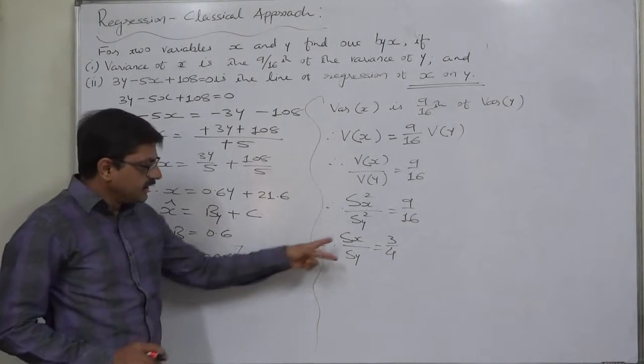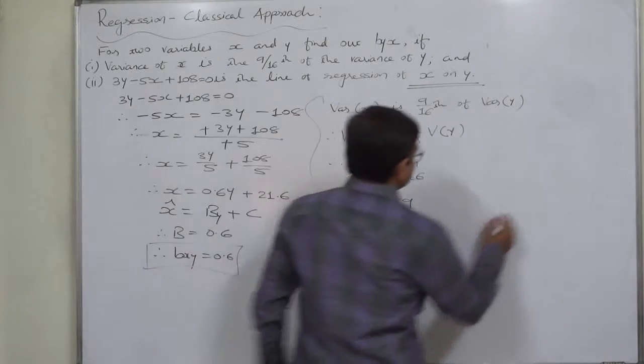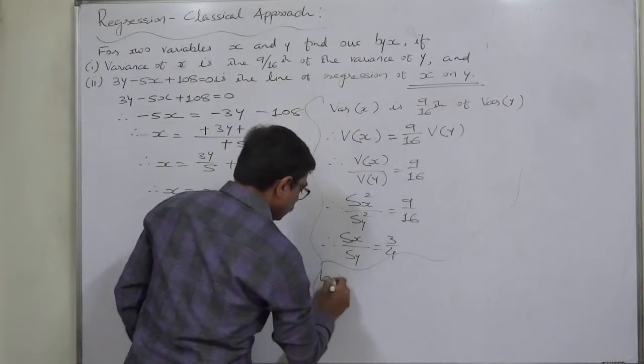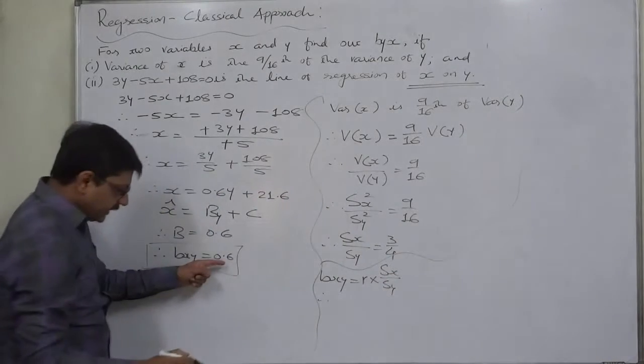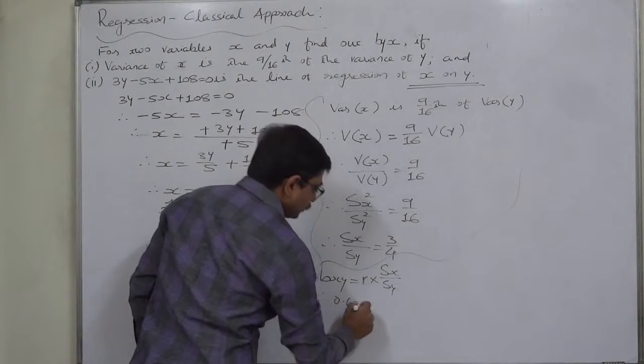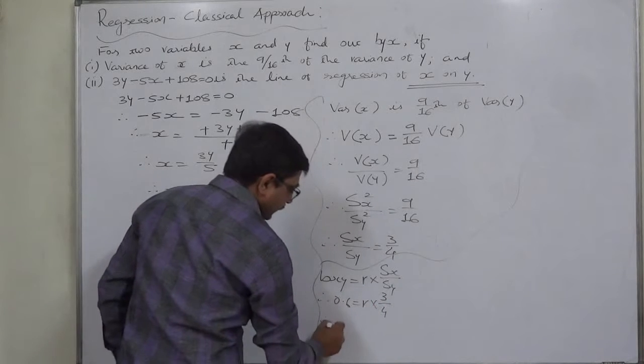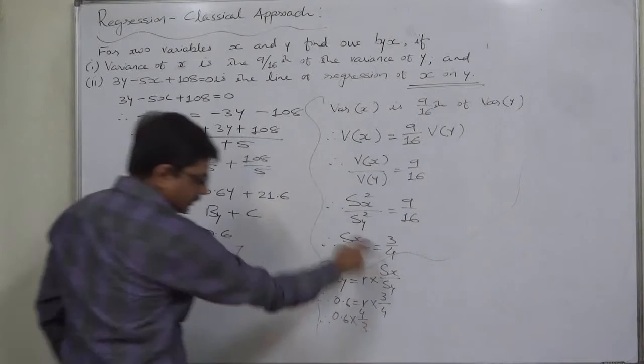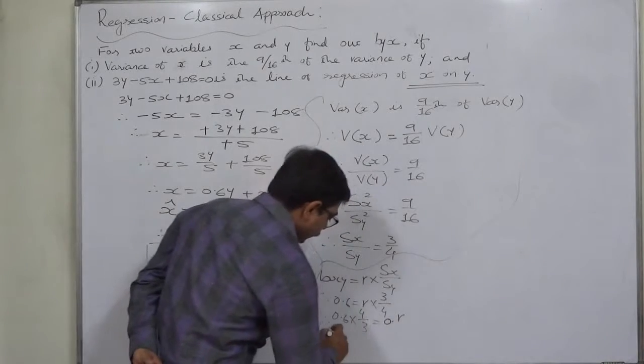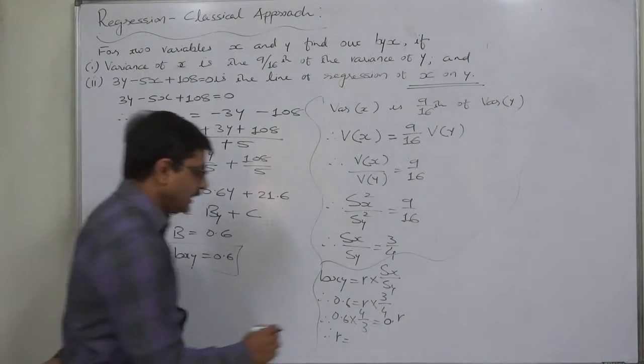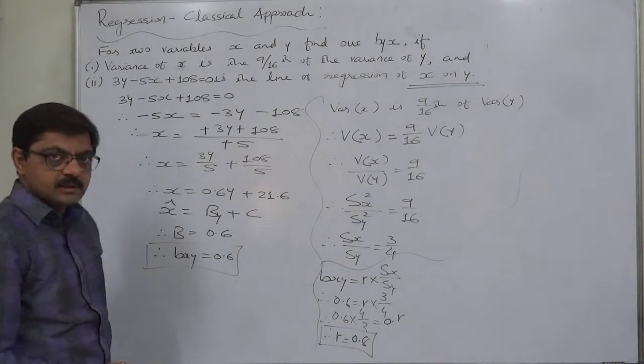Now in the formula of b_xy, σx upon σy also appears. B_xy equals ρ times σx upon σy. That means 0.6 equals ρ, the coefficient of correlation, into 3 by 4. That means 0.6 times 4 by 3 equals the coefficient of correlation, so the coefficient of correlation is 0.8.